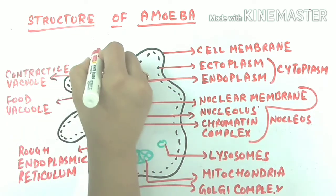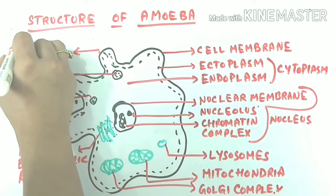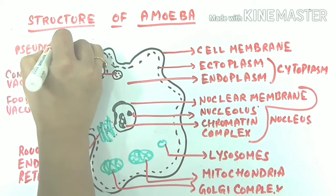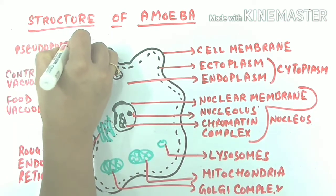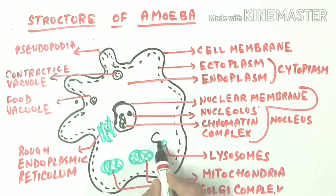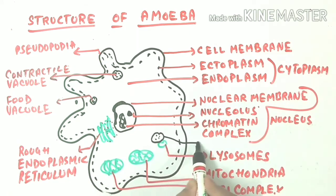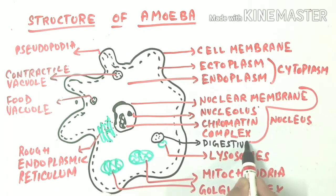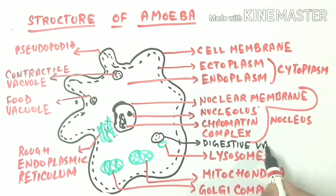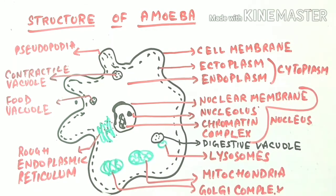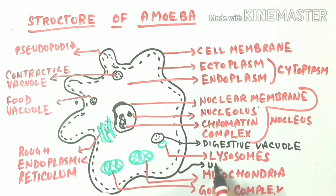This is the contractile vacuole, and this is the pseudopodia. Pseudopodia is a temporary protrusion of amoeba — amoeba protrudes temporarily using pseudopodia for feeding and movement. Here I am drawing one more food vacuole, which I'll call a digestive vacuole because it is near the lysosomes, which supply their enzymes for digestion.